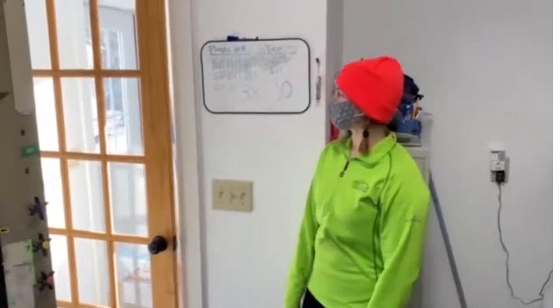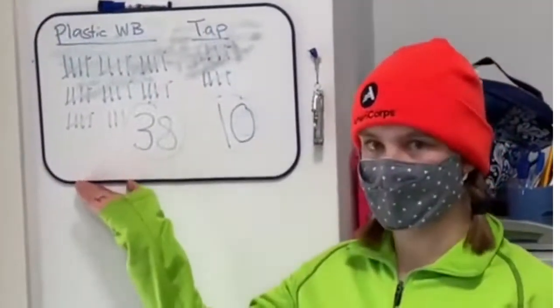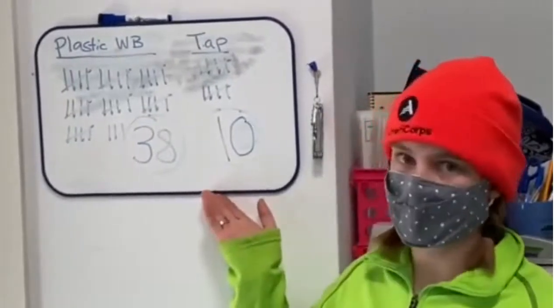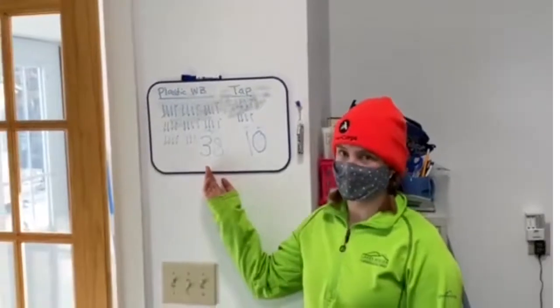We finished tallying our two samples. Our plastic water bottle sample had 38 pieces of microplastic and our tap water sample had 10 pieces of microplastic. There's a pretty big difference between these two numbers.